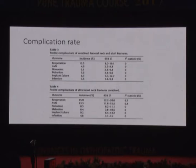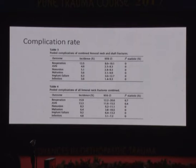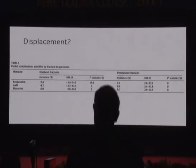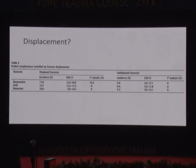If we look at combined femoral neck shaft fractures, the incidence of re-operation for the neck itself surprisingly goes down a little bit. So isolated femoral neck fractures have a higher incidence of re-operation. Regarding displacement, the re-operation rate is approximately 18% for displaced fractures and around 7% for undisplaced fractures. Your risk of re-operation is double if the fracture is displaced. AVN is about 14-15% with displaced versus 6% undisplaced, and non-union 10% versus 5%.